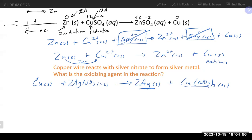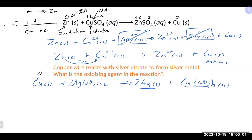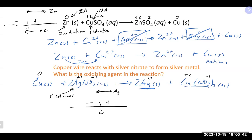Looking at the oxidation states: copper by itself is zero; in silver nitrate, silver is +1 and nitrate is −1. On the right side, silver becomes zero and copper becomes +2. The silver started at +1 and ended at 0 — becoming more negative — so silver is being reduced. By default, copper must be the one being oxidized, which we confirm: copper went from 0 to +2, becoming more positive.